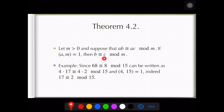In the example, 68 ≡ 8 (mod 15). Notice that we can rewrite 68 as 4 × 17 and 8 as 4 × 2. Since 4 and 15 are relatively prime, we can cancel out the 4 and get the simplified answer: 17 ≡ 2 (mod 15).